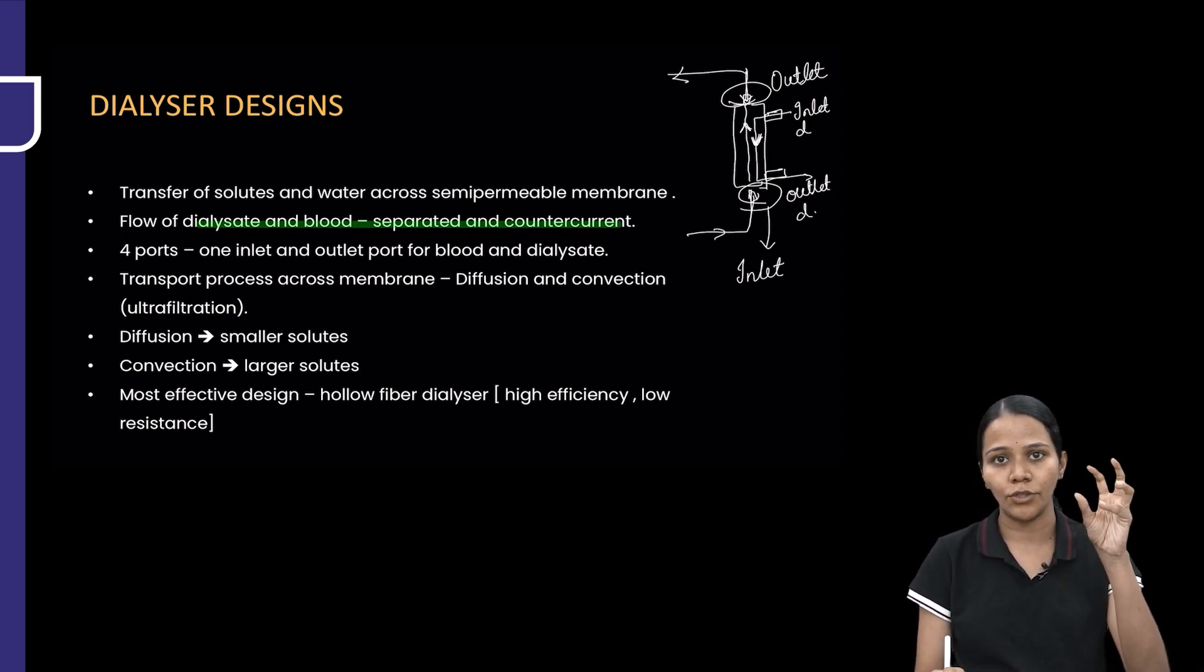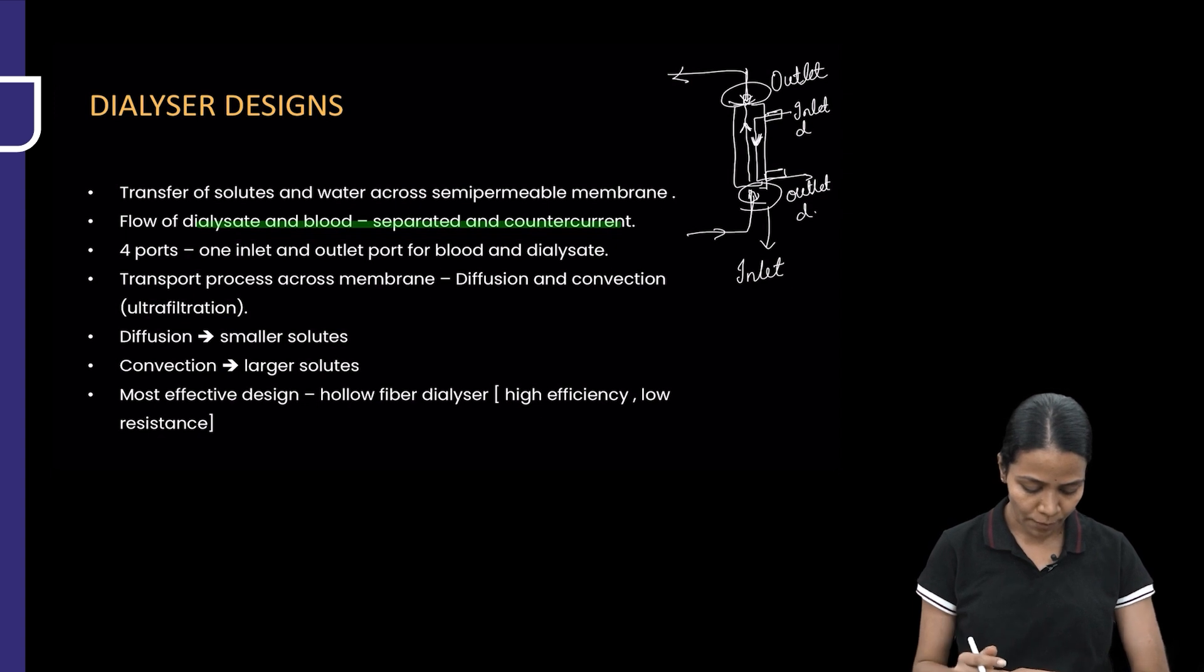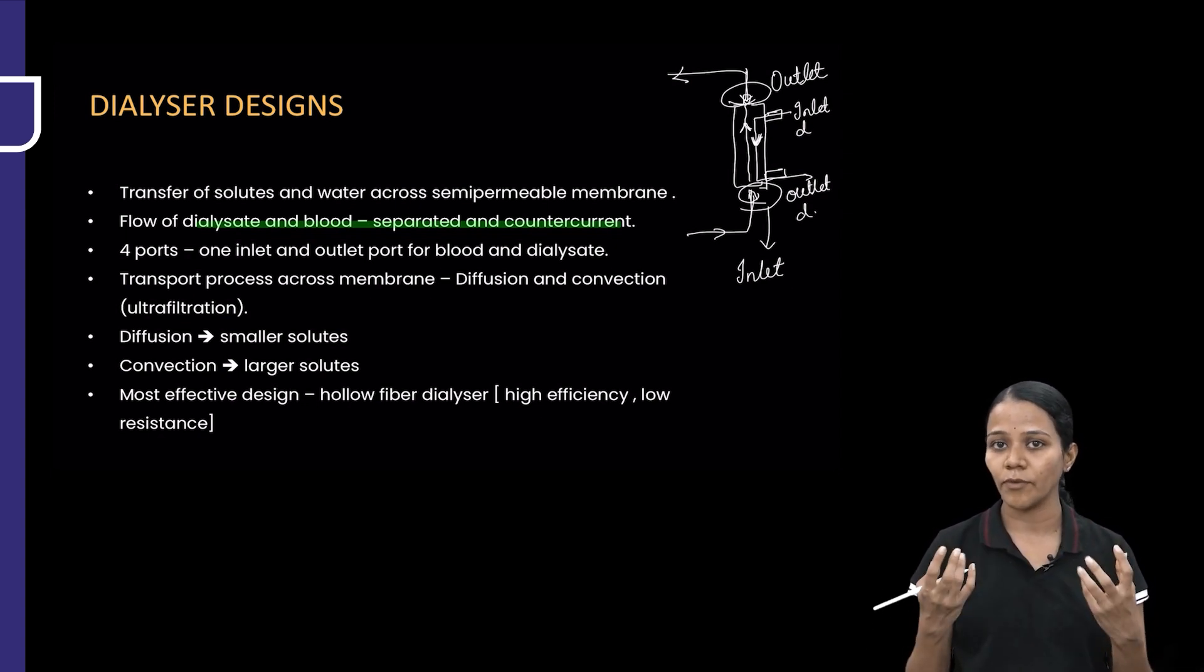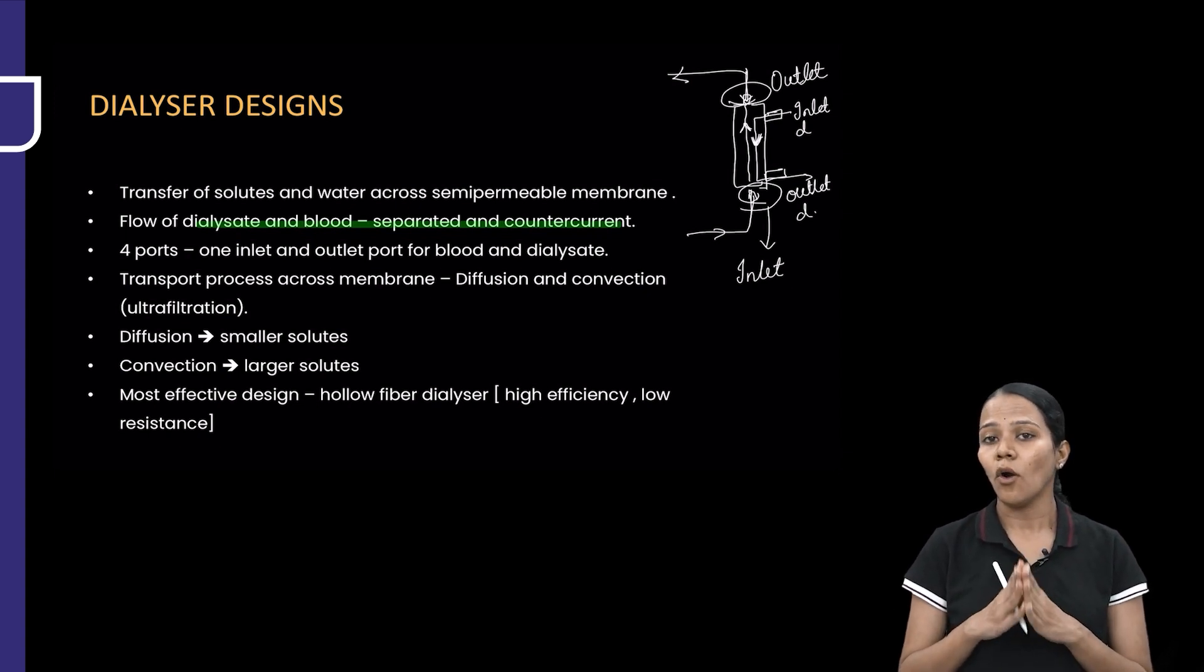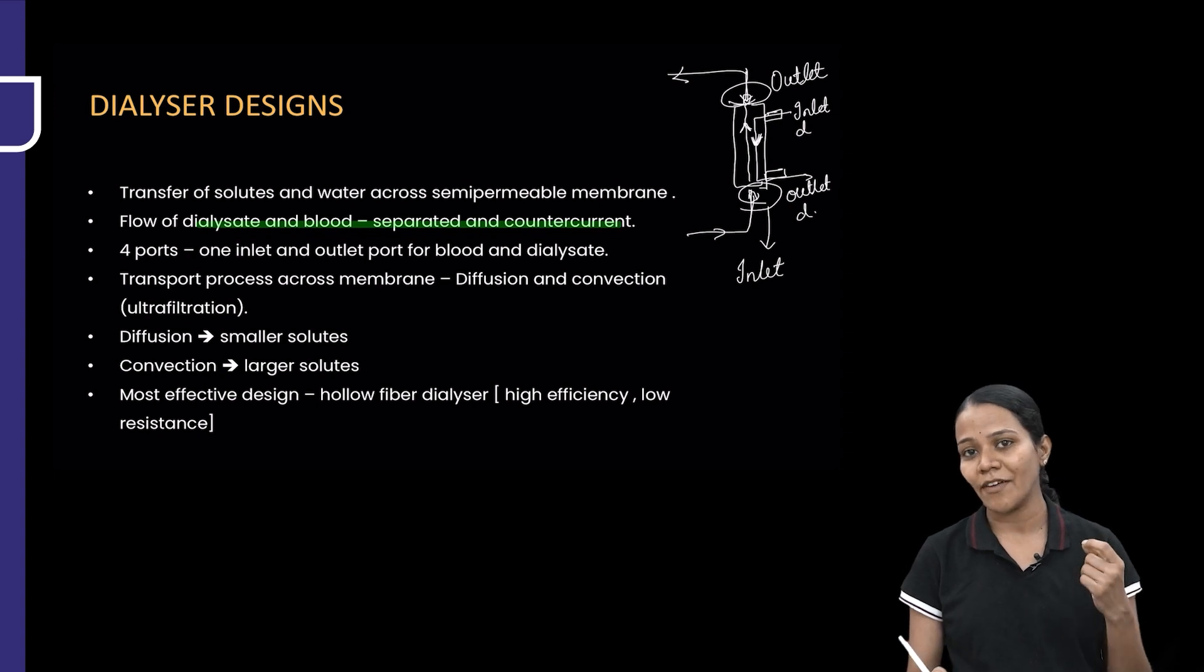Convection is where larger solutes will move along with water through the bigger pores, so that larger molecules are removed. The most effective design is a hollow fiber dialyser. These fibers have high efficiency and low resistance for the passage of blood and dialysate.